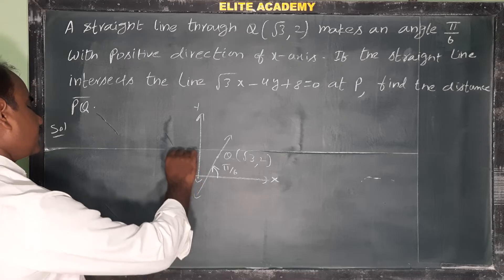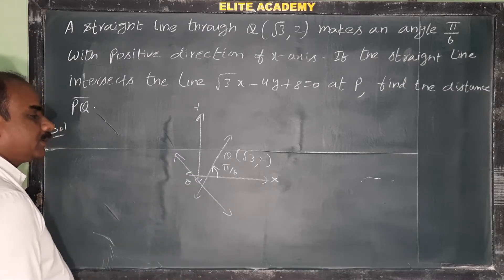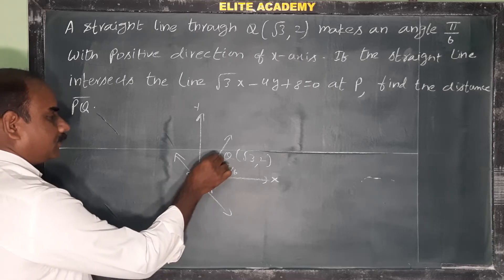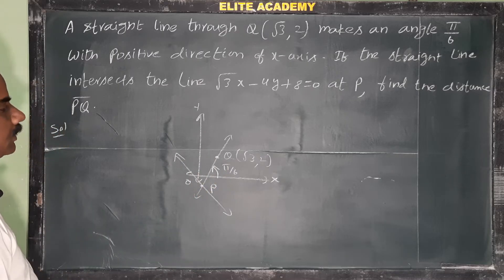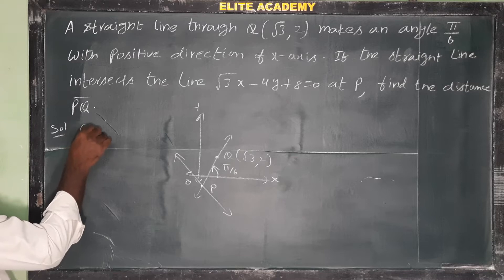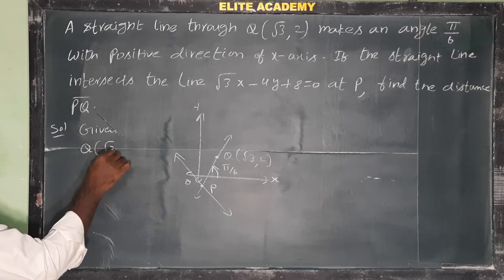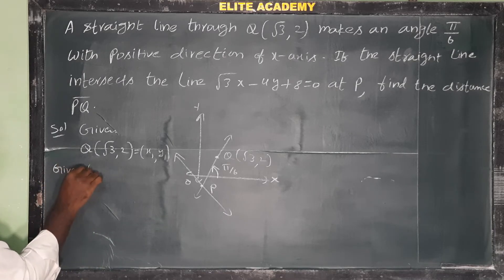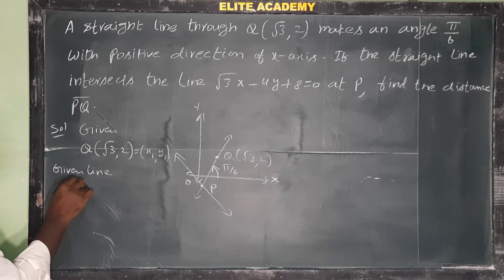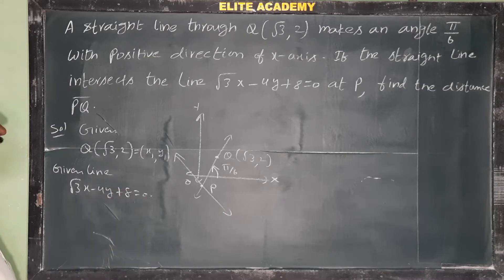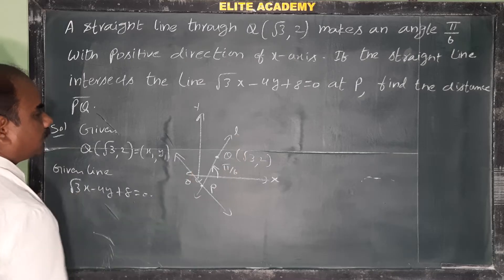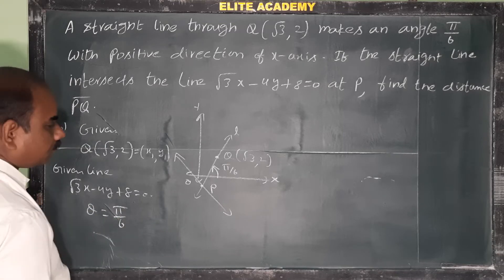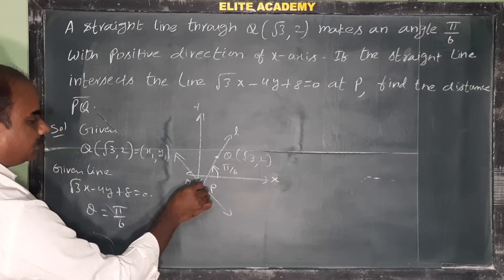The straight line intersects another line at point P. This is a rough diagram — the exact diagram aside. So first, write the given information: Q(√3, 2), which we denote as (x₁, y₁). The given line is √3x - 4y + 8 = 0. This straight line makes an angle π/6 with the positive x-axis, so we set θ = π/6.